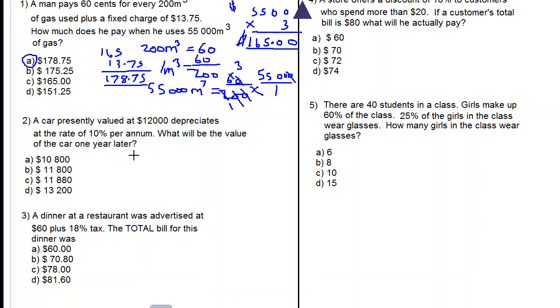Let's move on to number two. A car presently valued at $12,000 depreciates at a rate of 10% per annum. What will be the value of the car one year later? So let's find 10% of 12,000. Cancel two zeros from below, two zeros from above.